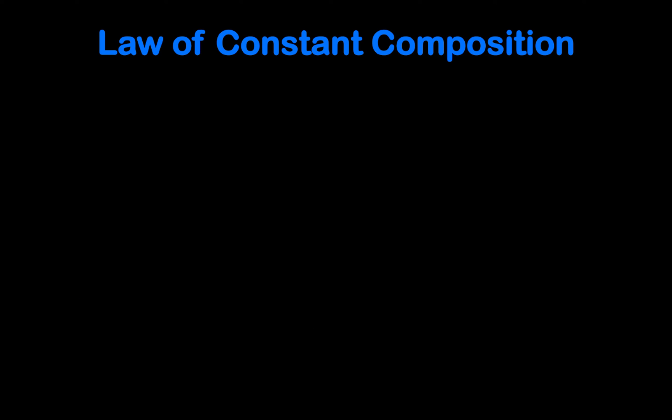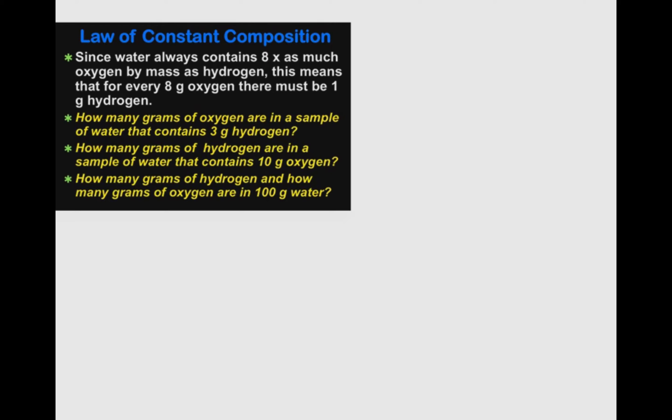Let's now consider some problems. Since water always contains 8 times as much oxygen by mass as hydrogen, this means that for every 8 grams of oxygen, there must be 1 gram of hydrogen. 8 grams of oxygen, 1 gram of hydrogen. This can be put into a ratio.